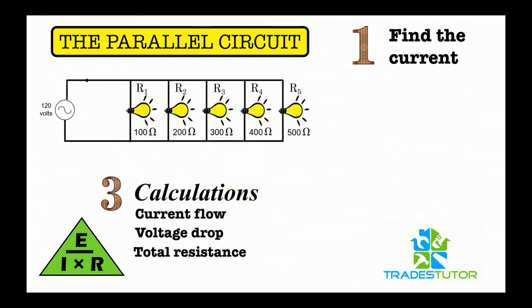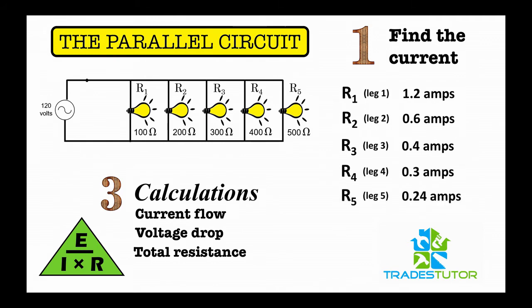Okay, now you can go through yourself and do all five of them, but here are the answers. R3 is 0.4 amps, R4 is 0.3, and R5 is 0.24. Now notice that as the ohms get larger, or the resistor gets larger, the amps go down. That makes sense—the higher the resistance, the less current flow that's going to go through.